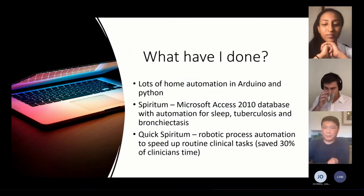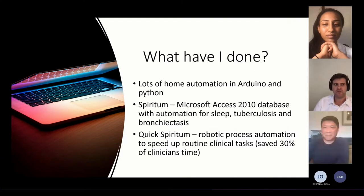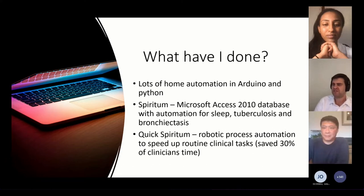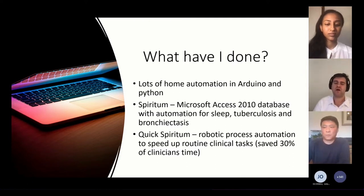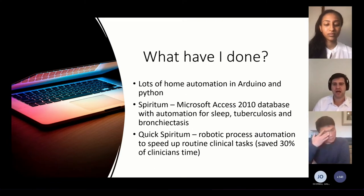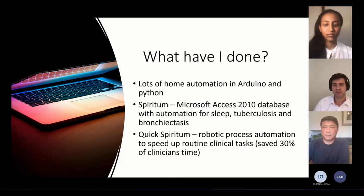So what have I done so far? I've done Arduino, which most of you probably know is a microcontroller, using languages like C++. I've done a lot of Python at home as well. And in the trust, I built a program called Spiritum in Microsoft Access 2010 — not really open source, but it's what I had available. I built this over a year to house the sleep, tuberculosis, and bronchiectasis work that we're doing. That included RPA using the open source program language AutoHotKey. It could write letters, get data, move data around. From that was a spinoff called Quick Spiritum — Robotic Process Automation. We did a little quality improvement program on that and it showed that it saved 30% of clinicians' time.